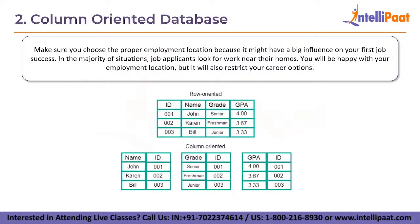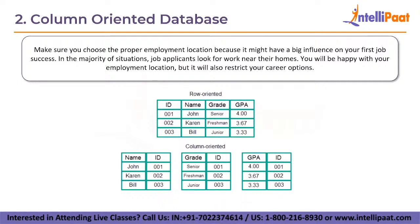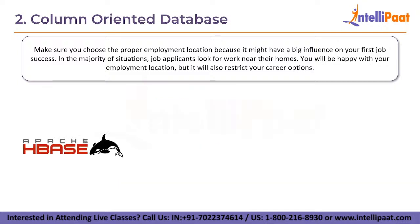Next, column-oriented databases work on columns and are based on the Bigtable paper by Google. Every column is treated separately, and values in single column databases are stored contiguously. They provide excellent performance in aggregation queries such as sum, count, average, and min. Column-based NoSQL databases are commonly used to handle data warehouses, business intelligence, CRM, and library card catalogues. Overall, column-store databases are suitable for analytics and reporting because of their rapid querying capabilities and ability to contain massive amounts of data without much overhead. Examples include HBase, Cassandra, and Hypertable.